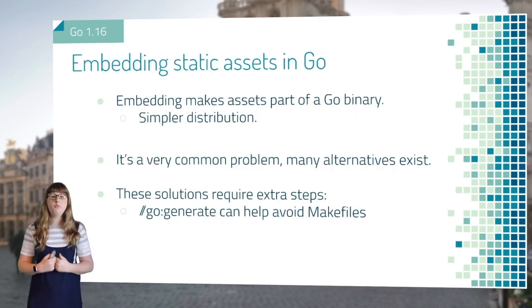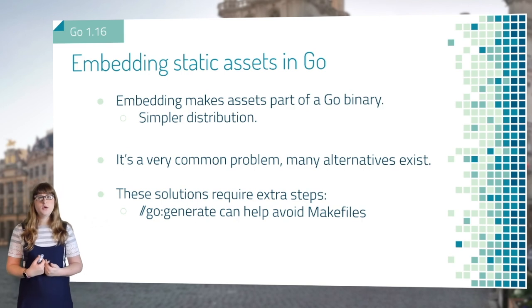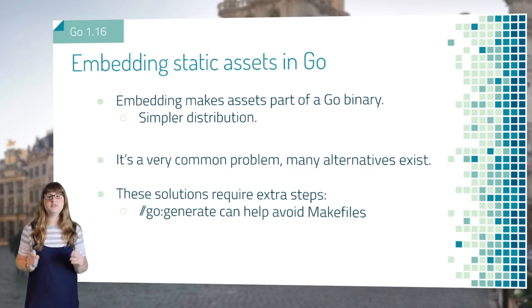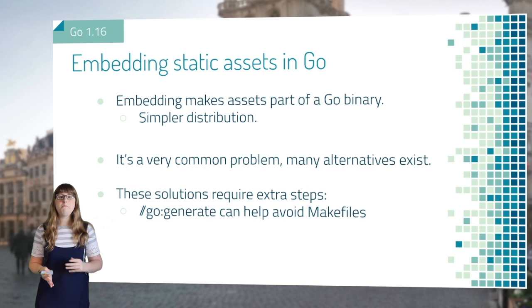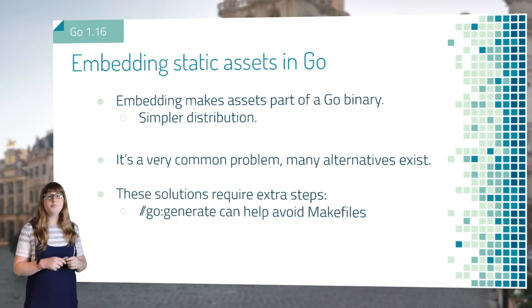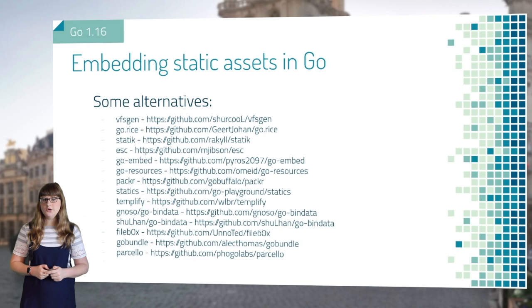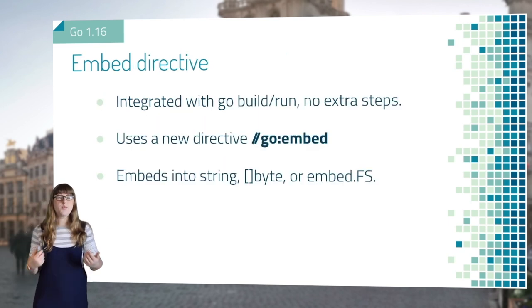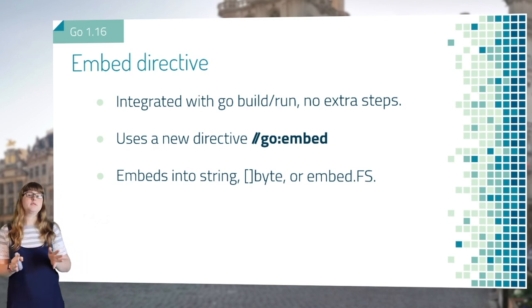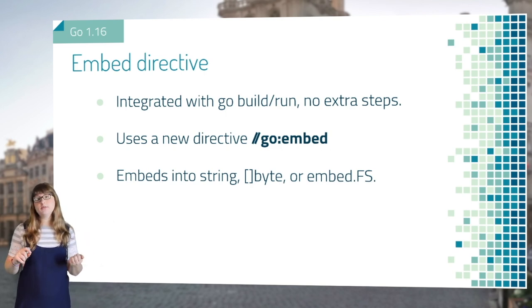Go 1.16 also tackles the very important problem of embedding static assets in Go. Embedding makes distribution easier by not having to provide additional files on the file system — everything lives inside your single binary. Many solutions existed before, often requiring extra commands in a makefile or GoGenerate. Go 1.16 now has the embed directive, which integrates with Go build and Go run with no additional steps, using the new `//go:embed` directive. Embed can embed files into strings, slices of bytes, or the new embed.FS.